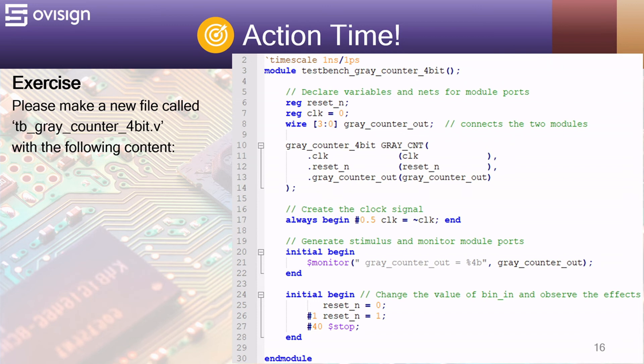The test bench structure is very simple. We first declare the test bench variables. We use the reg type for the module inputs and the wire type for the outputs. At line 10 we instantiate the module and connect it with the test bench variables.